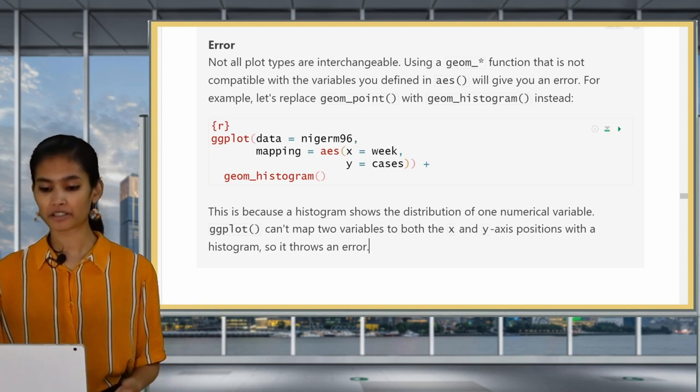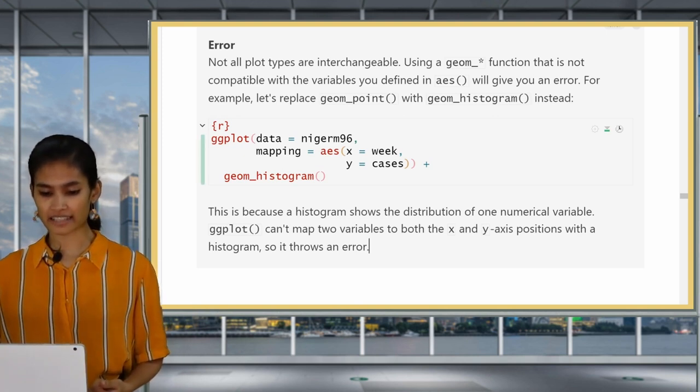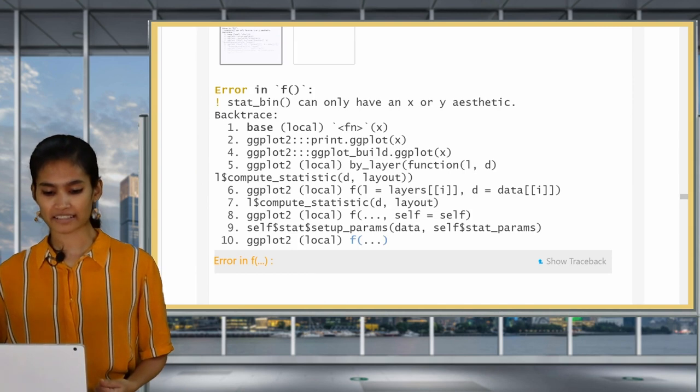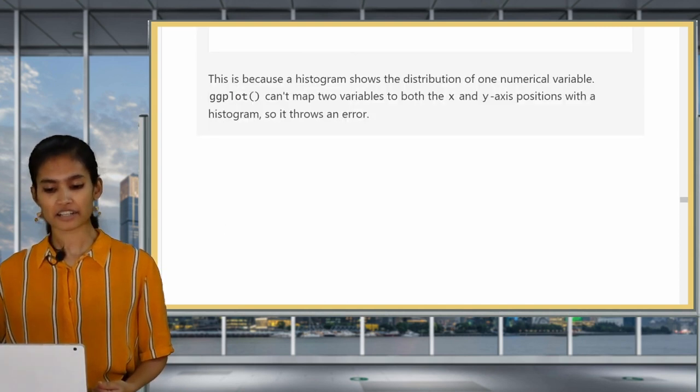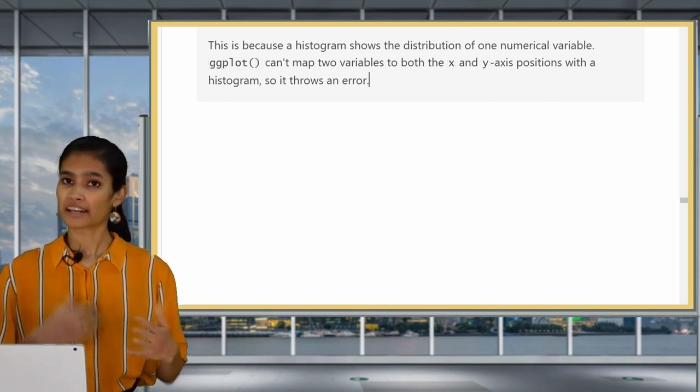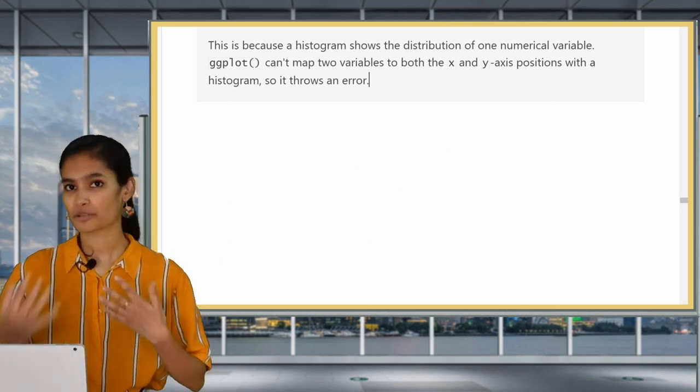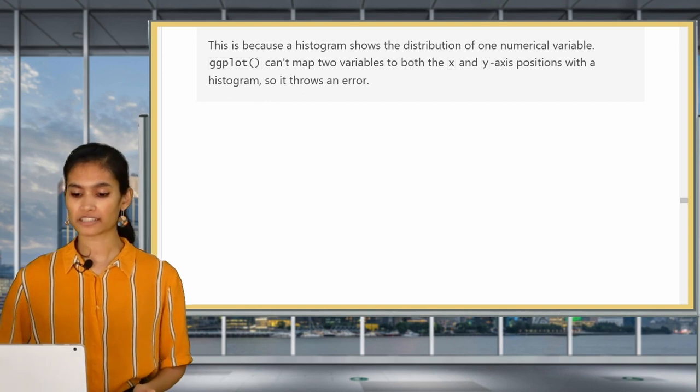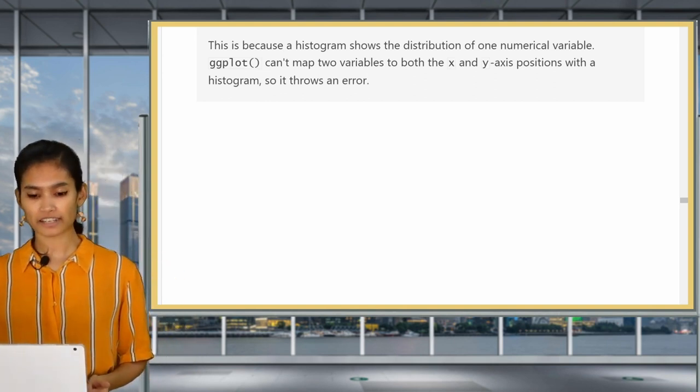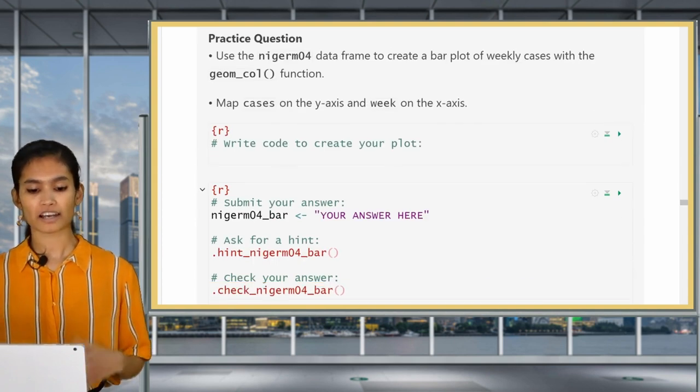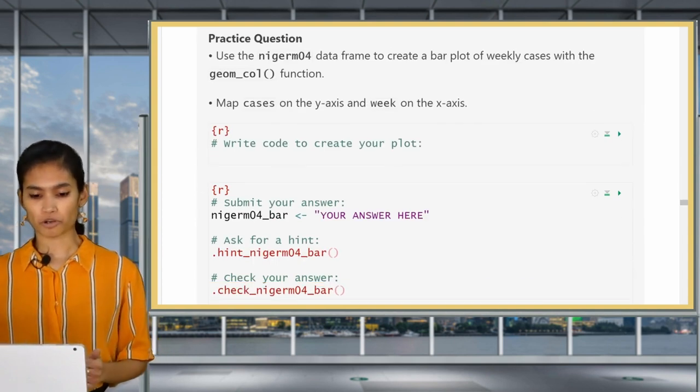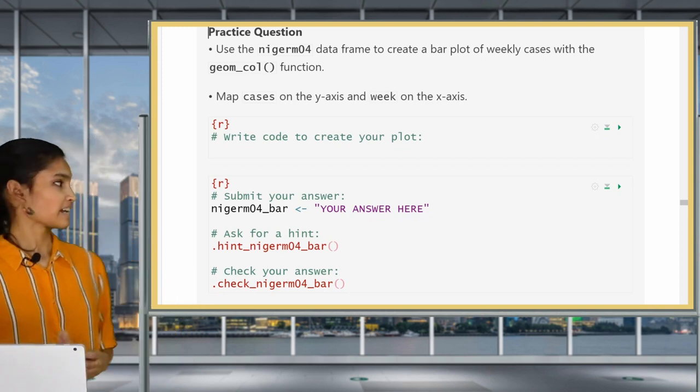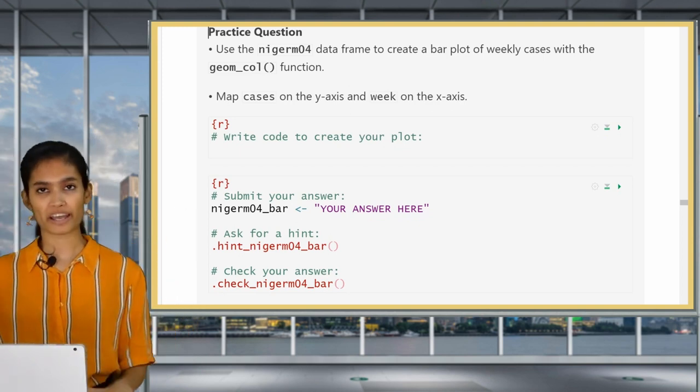It's important to note that we can't just change any geom function for another. In this case we changed geom point to geom call which worked because they both accept two continuous variables. Something like geom histogram would give us an error. Run this code as an example and you will see that here it says stat bin can only have an x aesthetic. This is because histograms show the distribution of just one numerical variable. Now that we gave AES two numerical variables ggplot doesn't know how to map that and so it gives you an error. Now it's time for you to practice changing geom functions.